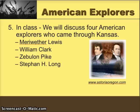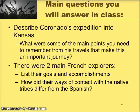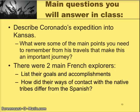Coming up in class, we're going to discuss the four American explorers next — probably on Thursday. Those will be Meriwether Lewis, William Clark, Zebulon Pike, and Stephen H. Long. Here again are your questions to keep in mind: describe Coronado's expedition into Kansas and what were some of the main points to remember from his travels. And the second question: there were two main French explorers — list their goals and accomplishments, and how did their ways of contact with the native tribes differ from the Spanish? Have this ready to go for class.